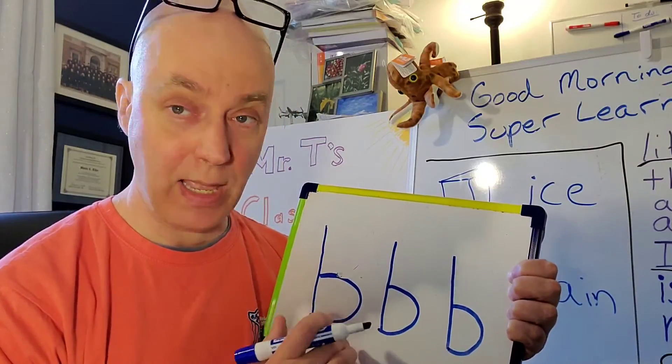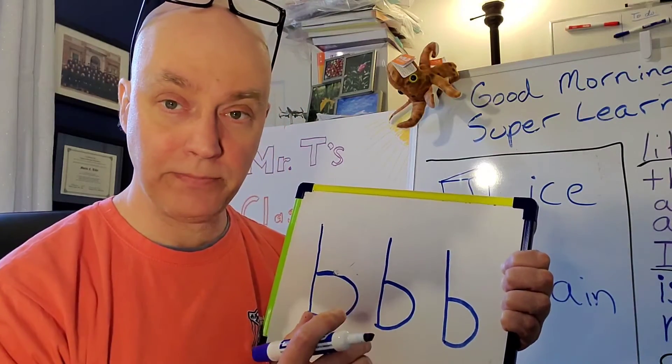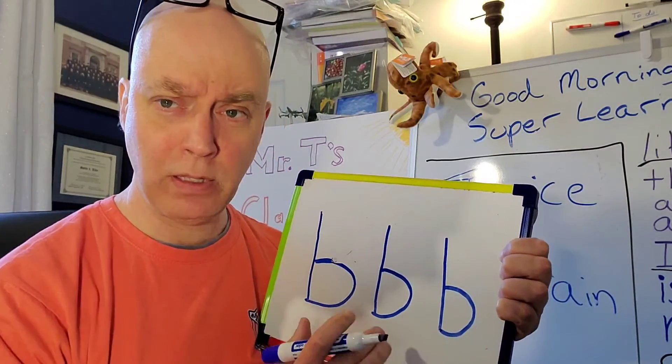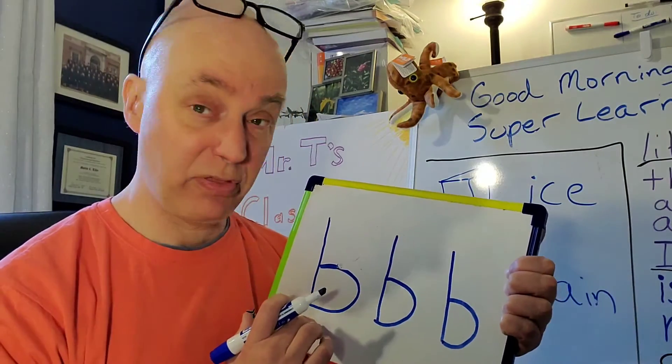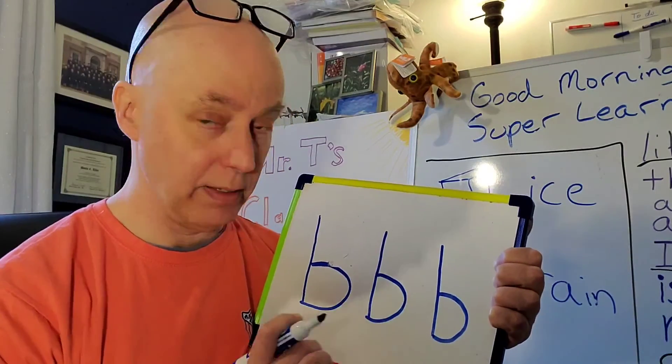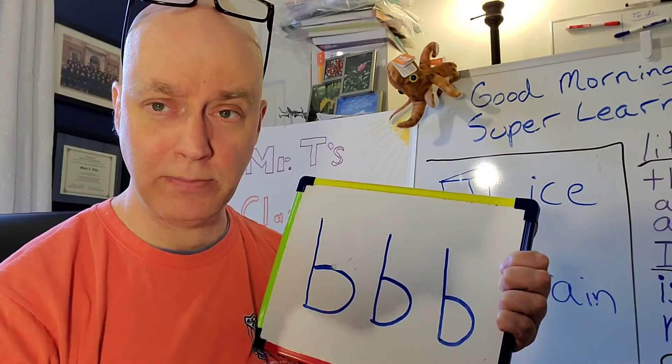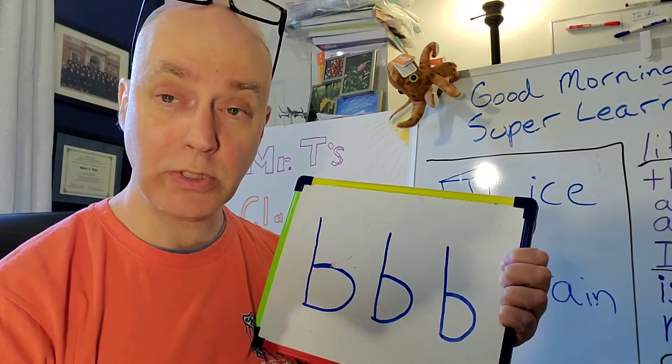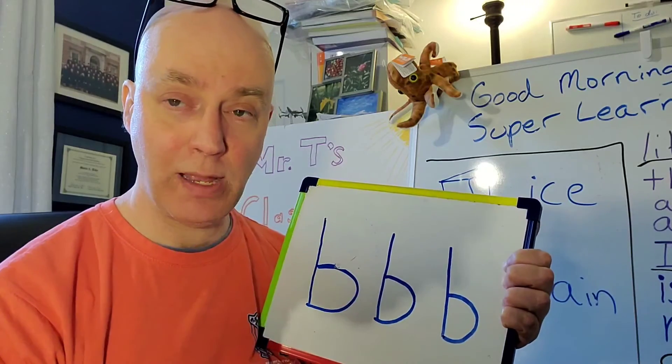So I have three capital Bs. B, B, B. Can you write three, three, did I say capital Bs? I meant to say lowercase Bs. I have three lowercase Bs. B, B, B. Can you write three lowercase Bs for me? Then show it to me. Excellent job.